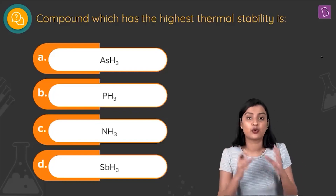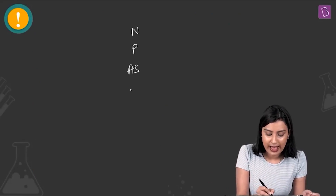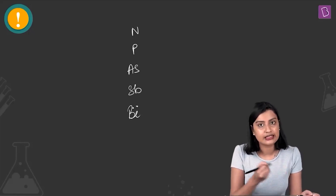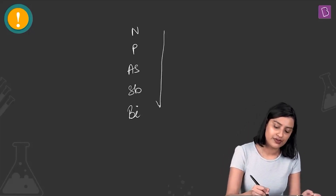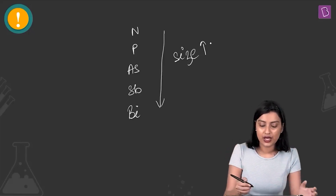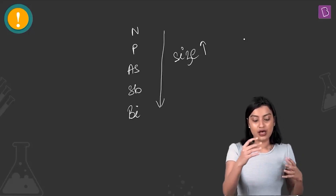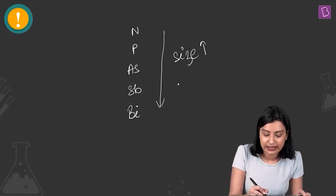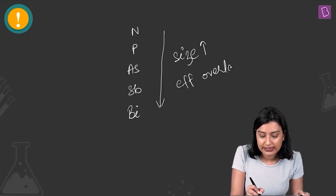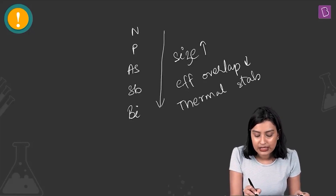What we need to address is how effective the orbital overlap is. Group 15 elements are nitrogen, phosphorus, arsenic, antimony, and bismuth. As you go down the group, size increases. For hydrides, effective overlap will be higher when the central atom has a smaller size. So effective overlap decreases as we go down the group, and therefore thermal stability decreases as we go down the group.